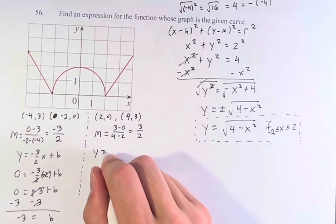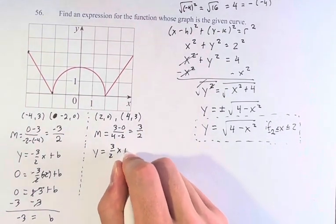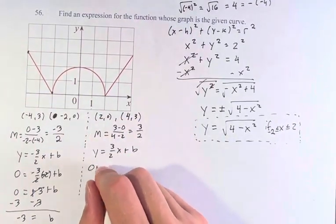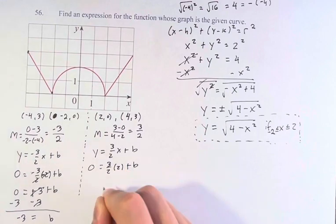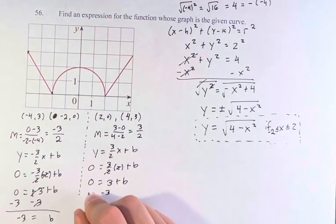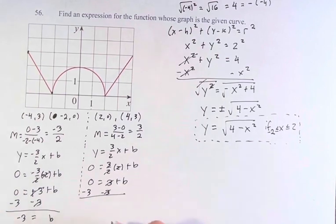Same thing here. y = positive 3/2 x + b this time. Plug in (2, 0). So 0 = 3/2 times 2 + b. 0 equals, these cancel, 3 + b. Negative 3 on both sides. These cancel. b is also equal to -3 for this one.